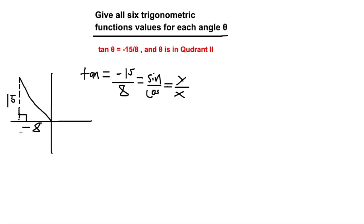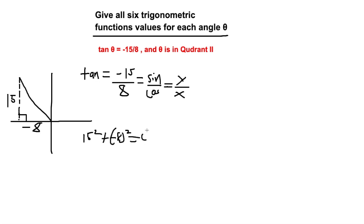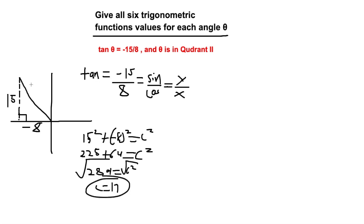The x coordinate is negative 8, because it's on the left side of the x-axis. We need to find the hypotenuse using the Pythagorean theorem: a squared plus b squared equals c squared. So 15 squared plus negative 8 squared equals c squared: 225 plus 64 equals 289. Taking the square root of both sides, c equals 17.